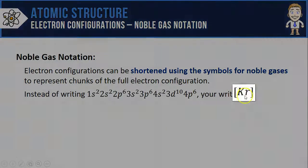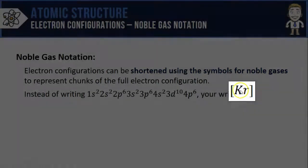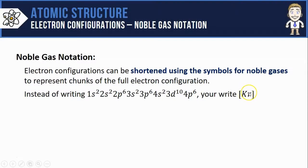For example, if you took the noble gas krypton Kr, you could put its symbol in these square brackets, and doing that is the exact same thing as writing krypton's entire electron configuration. So it saves you from having to write 1s2 all the way up to 4p6.